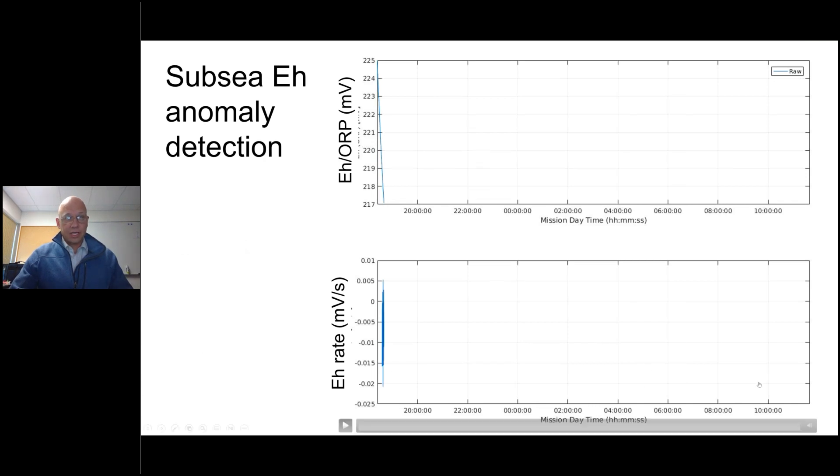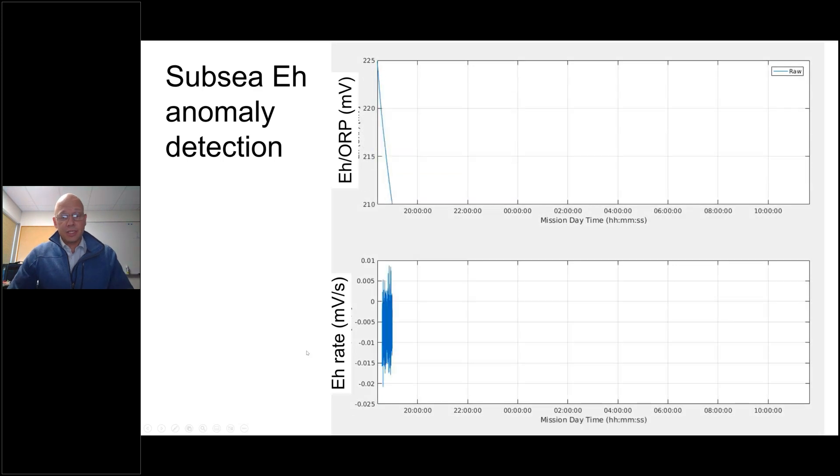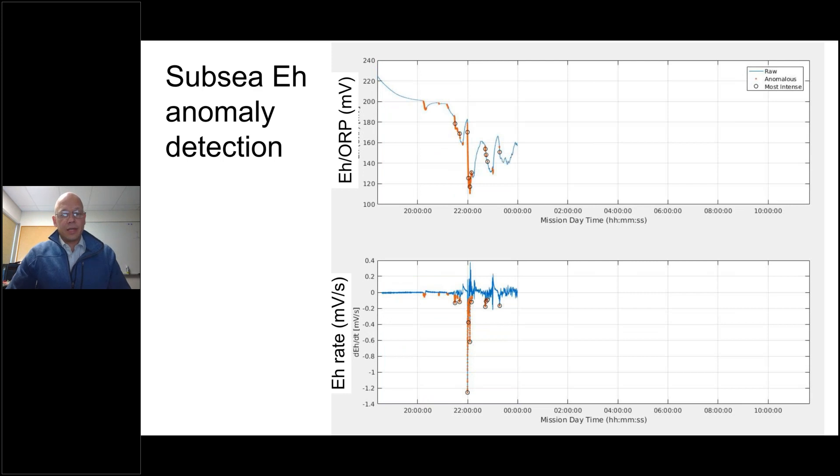Here's an example, in the hydrothermal plume context, of a subsea processing of EH or ORP data that attempts to identify data likely indicative of contact with a buoyant plume. On the upper plot, you see the raw EH or ORP data. On the lower plot is the rate or differentiated version of the upper plot. The data highlighted in orange has been identified autonomously as an outlier, uses a robust statistic to determine what interval represents mean data versus outlier. And then the black highlighted circles are peaks that the algorithm has selected as both significant and sufficiently separated from one another that they are probably related to different phenomena in the water column.